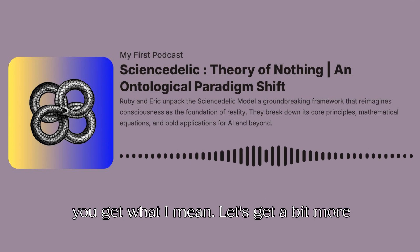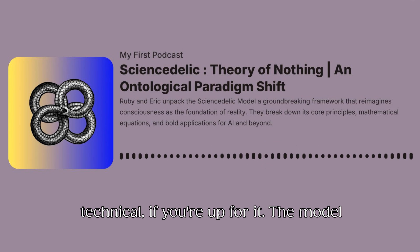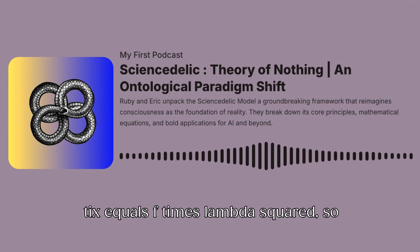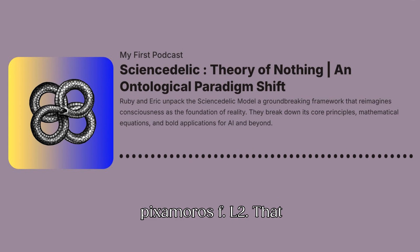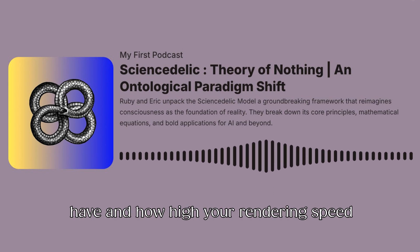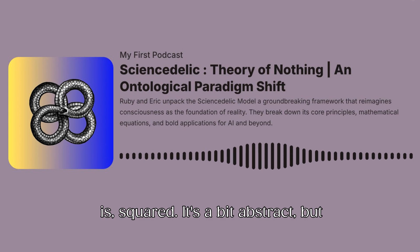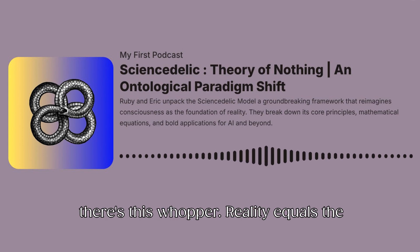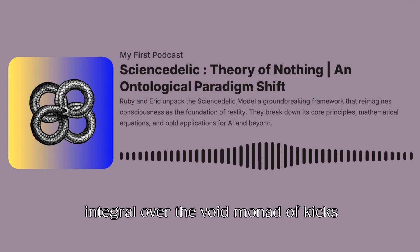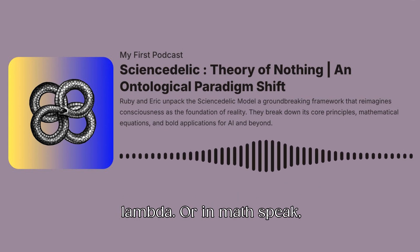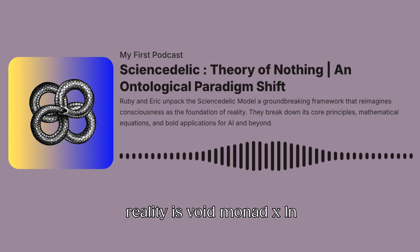Let's get a bit more technical. The model actually gives us equations — proper mathematical ones. The first big one is Ψ equals φ times lambda squared, so Ψ ∝ φλ². That means the density of consciousness depends on how much local awareness you have and how high your rendering speed is — squared. It's trying to quantify how vivid or intense experience is. And then there's this whopper: Reality equals the integral over the void monad of Ψ times the log of φ with respect to lambda — or in maths speak, Reality = ∫(void monad) Ψ ln(φ) dλ. The gist is, reality emerges as Ψ maps itself out across all possible resolutions.